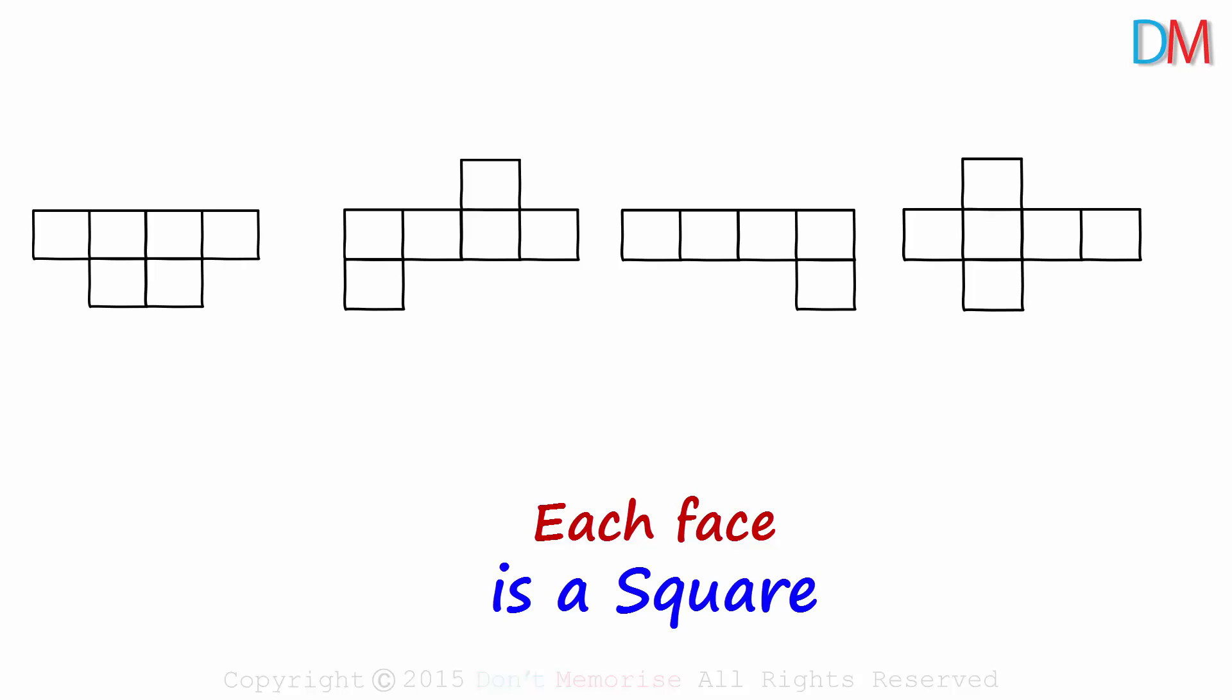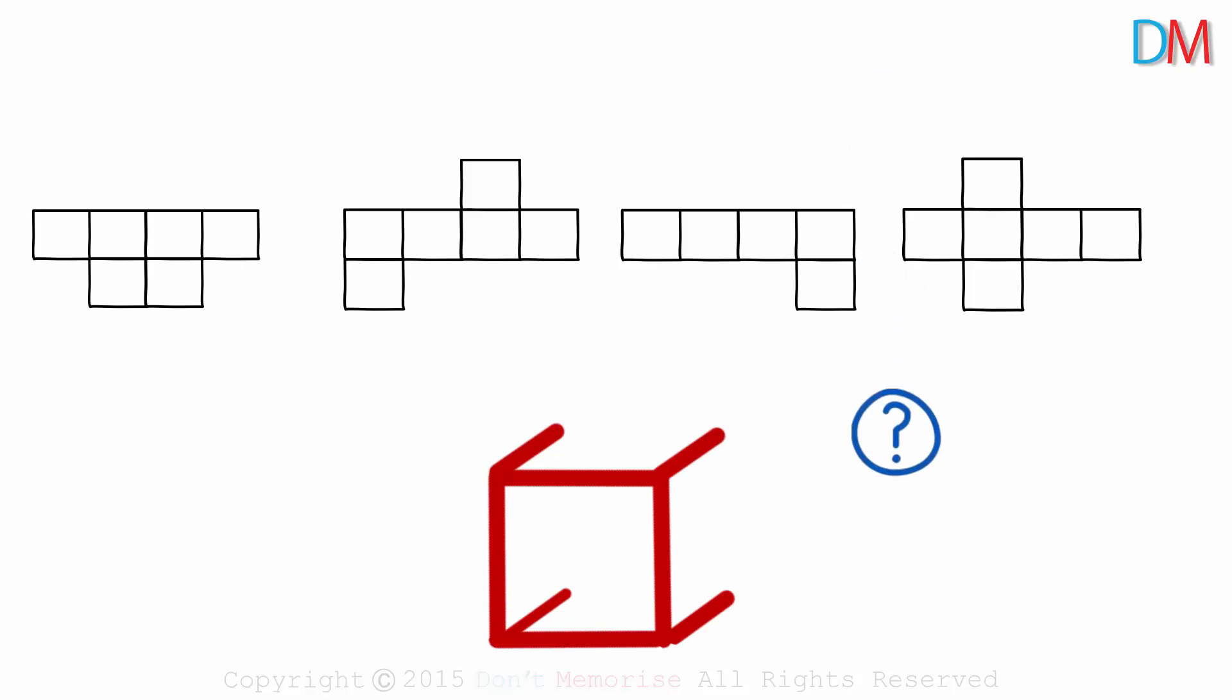Here's the first net, the second one, the third one and the fourth one. We assume that each face in each of the nets is a square. These are the four nets we have. How many of them when folded would result in a cube?